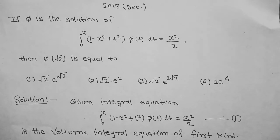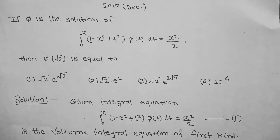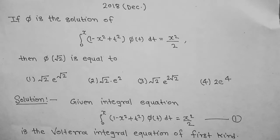The given integral equation — integration from 0 to x of (1 minus x² plus t²) times φ(t) dt equals x²/2 — is equation number 1, and this is a Volterra integral equation of the first kind. We differentiate equation 1 to convert it to a Volterra integral equation of the second kind.